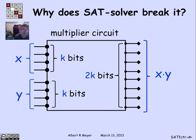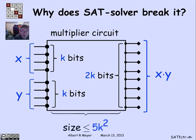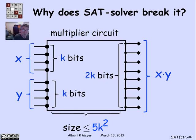This is a multiplier circuit. It takes a k-bit x in and a k-bit y in, and it spits out the product, which is another 2k-bit number. This is not a terribly big circuit. The naive way to design it would use a number of gates and wires that is about quadratic in the number k. It's easy enough to design one where the size is literally bounded by 5 times k squared, maybe plus a constant. This is definitely a small polynomial, so given the number of bits we're working with, it's easy enough to build this multiplier circuit.